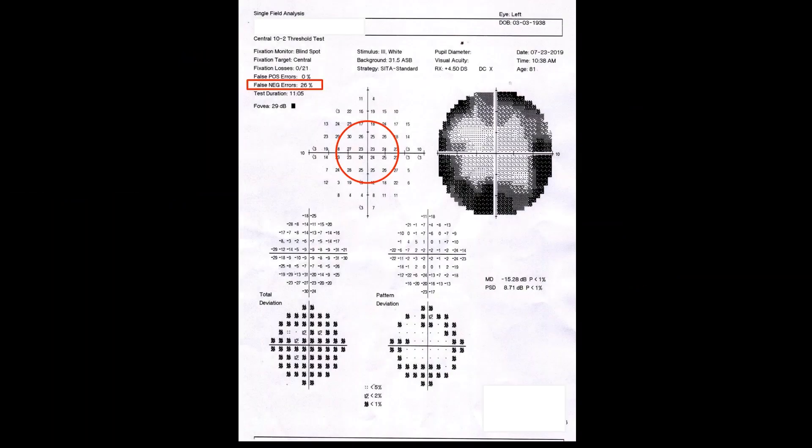This visual field has high false negative responses and the best sensitivity is at four primary points. There is a patchy reduction of sensitivity towards the edge. This results in a cloverleaf pattern in the grayscale which is due to patient's inattention as the test progresses.